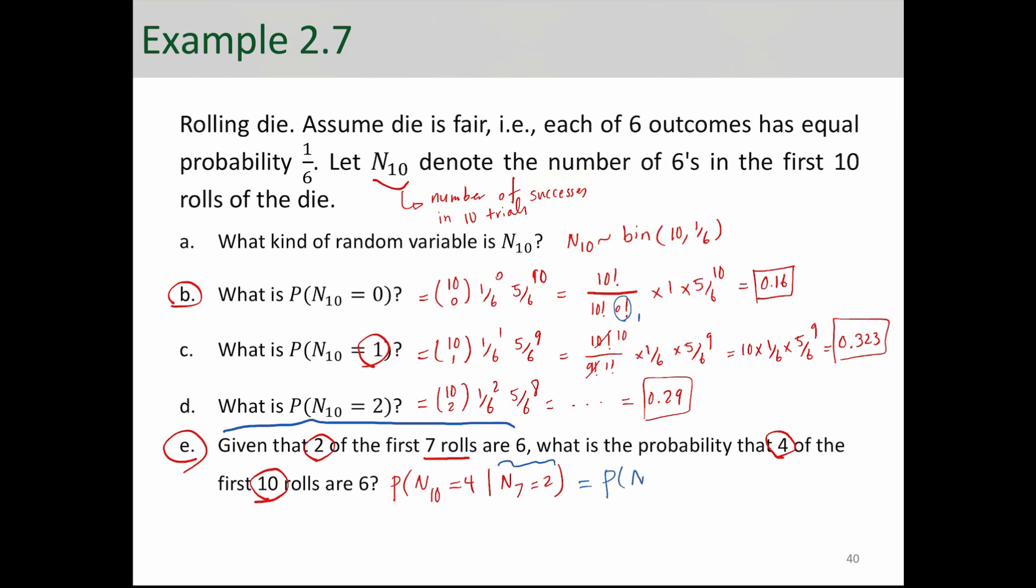So that is equal to probability of n3 equals 2. And you can calculate that with 3 choose 2, 1/6 to 2, 5/6 to 1. 3 choose 2, you cancel these 2, you have 3 up here. And 1 factorial is just 1. So 3 times 1/6 squared times 5/6. And that is 0.069.